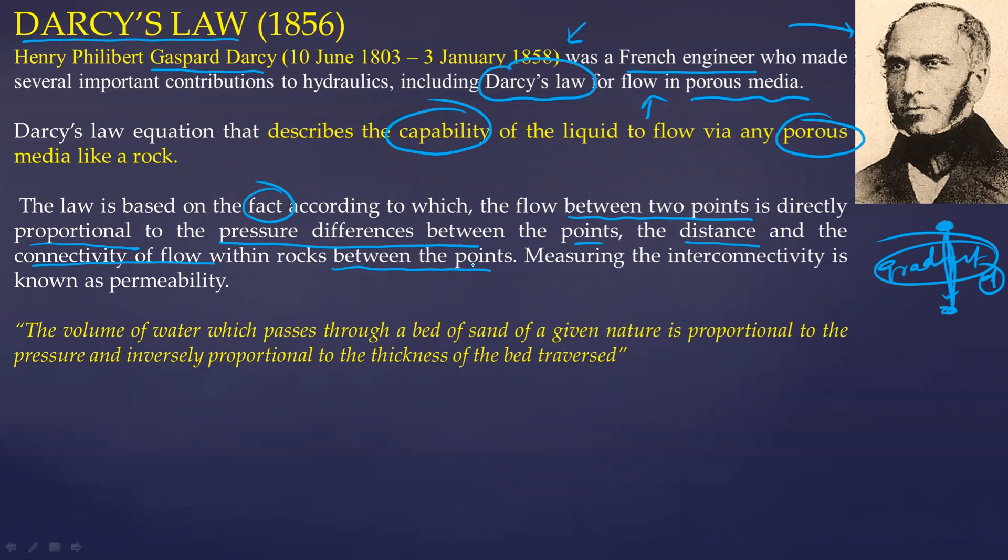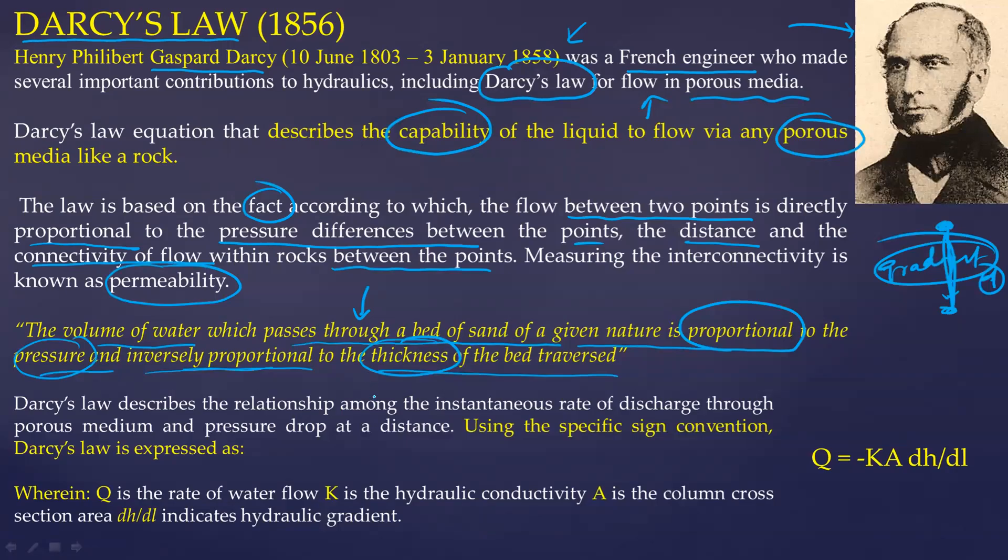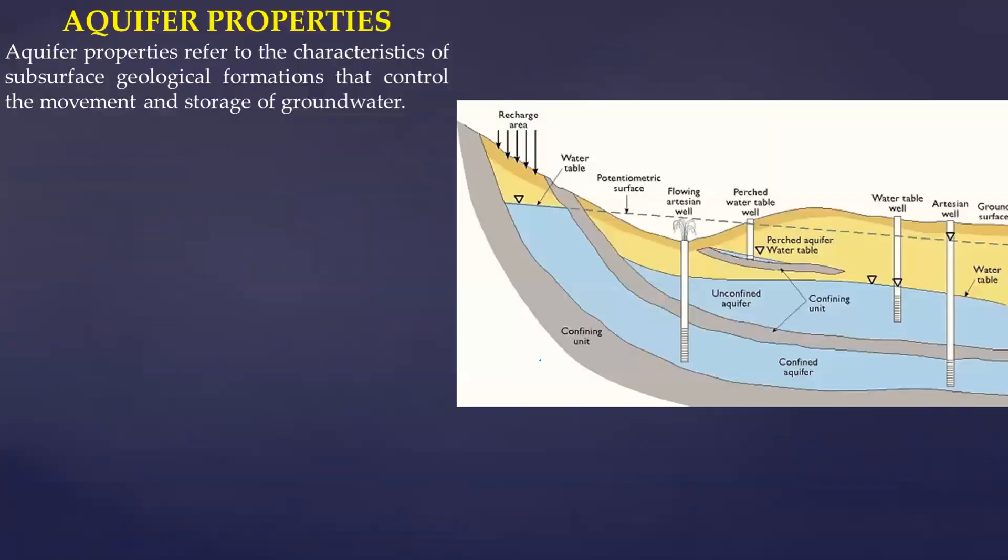Darcy's law equation describes the capability of the liquid to flow via any porous media like a rock. The law is based on fact that flow between two points is directly proportional to pressure differences between the points and also the distance and connectivity of flow. Measuring the interconnectivity is what we talk about as permeability. Volume of water which passes through a bed of sand is proportional to the pressure and inversely proportional to the thickness of the bed traversed. Using a specific sign convention, Q equals minus K A dH upon dL, where Q is rate of water flow, K is hydraulic conductivity, A is column cross section area and dH by dL indicates hydraulic gradient.